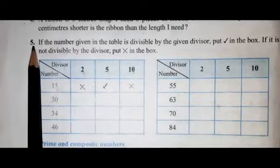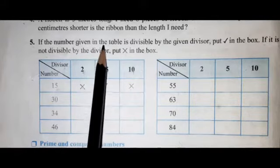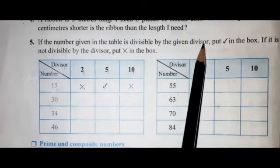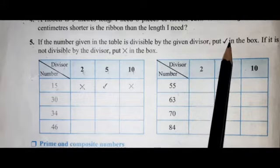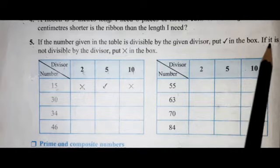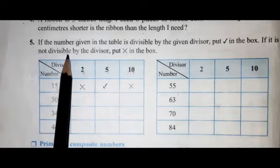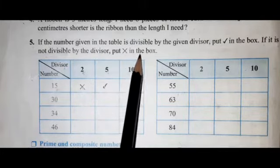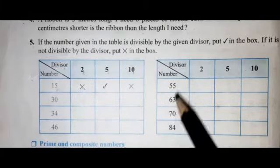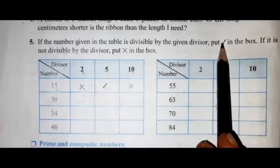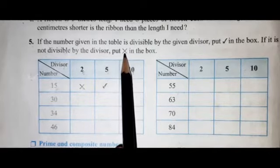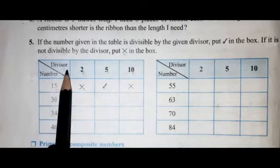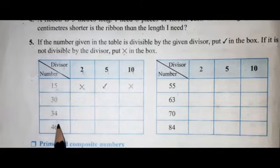Question number 5: if the number given in the table is divisible by the given divisor, put a tick in the box. If it is not divisible by the divisor, put a cross in the box — tick for correct answer and cross for wrong answer. Now see the table; here are divisors and numbers.